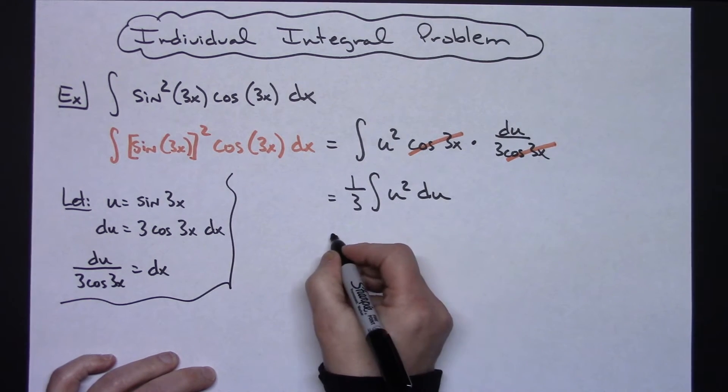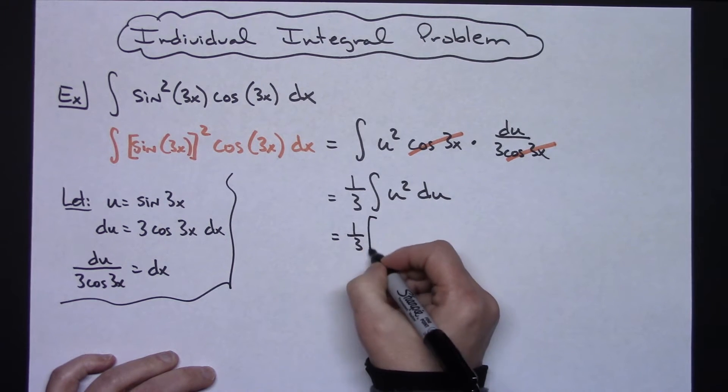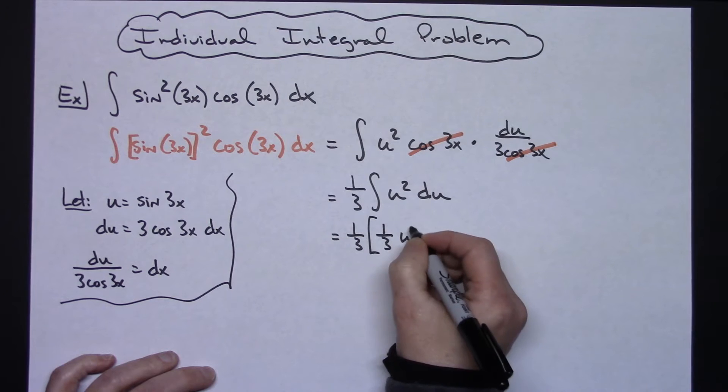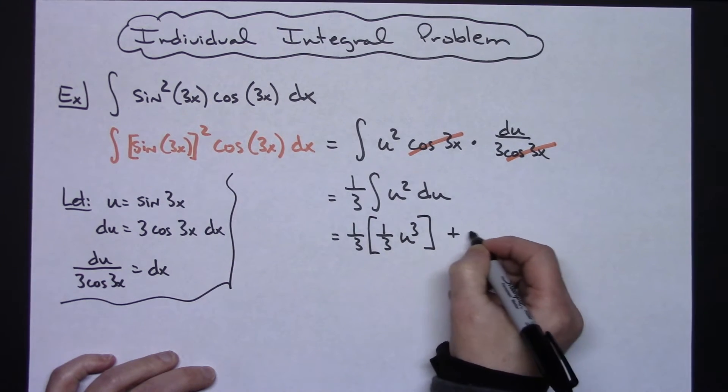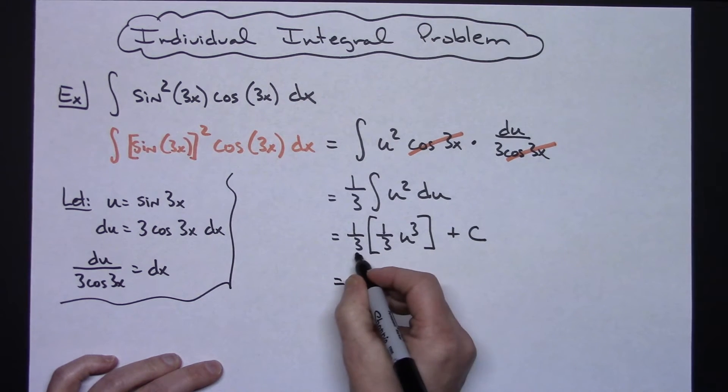Now I'm actually down to a place where I can integrate this. One-third integrating by adding 1, so add 1 I get a 3—that's going to make that a one-third u to the third, and then we can go ahead and throw in that plus C so we don't forget it later.